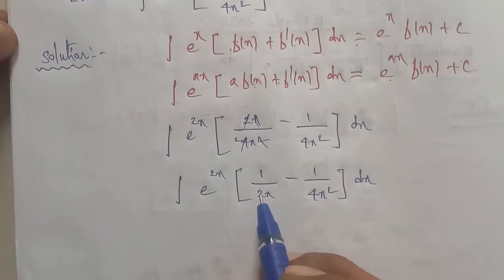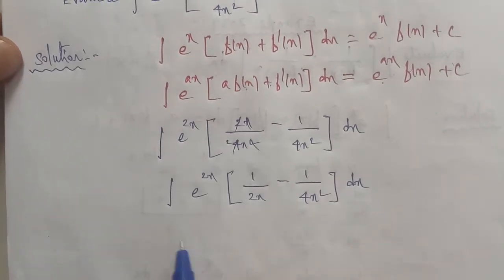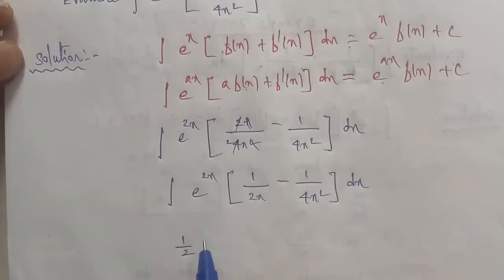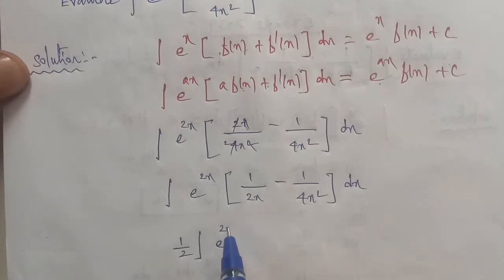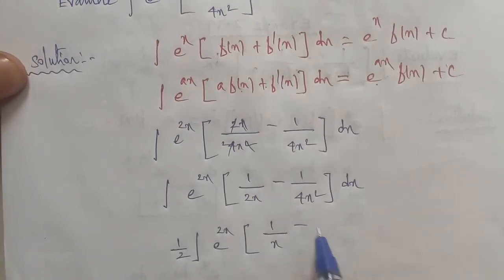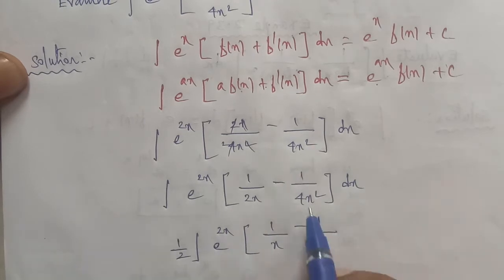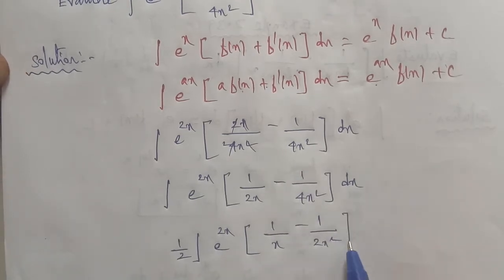Next, we factor out 1 by 2. So we get: one half times the integral of e power 2x times (1 by x minus 1 by 2x square) dx.